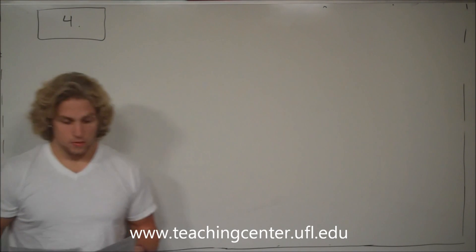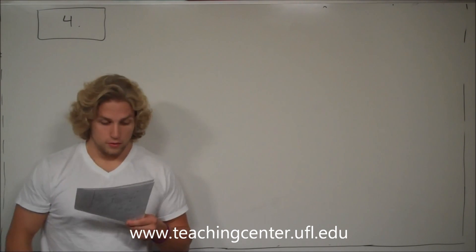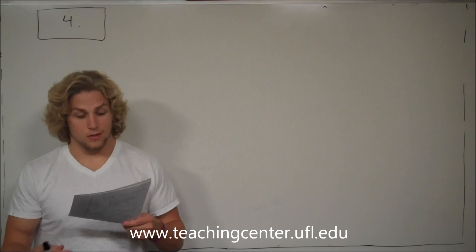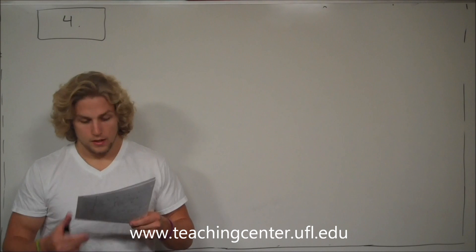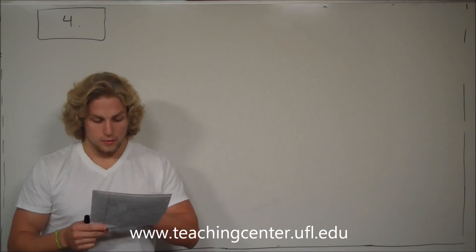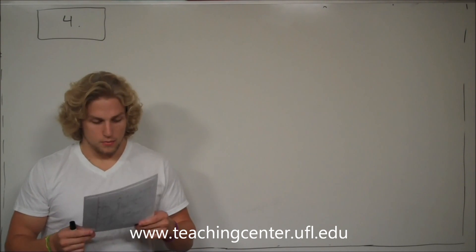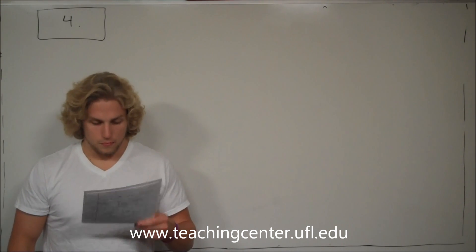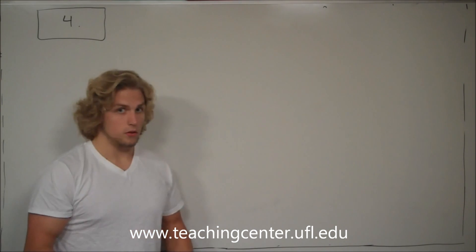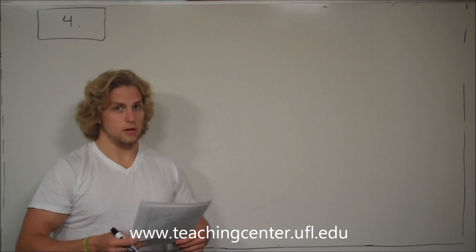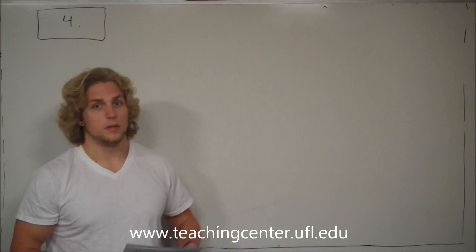This is problem number four. The problem states that you have two vectors, 3i minus 2j and 2i plus 3j minus 2k, that define a plane — specifically the plane of a triangle with both tails at one vertex and each head at one of the other vertices. Which of the following vectors is perpendicular to the plane? So you are taking two vectors and making a plane out of it and trying to find a vector that is perpendicular to that plane.